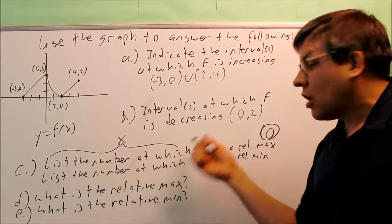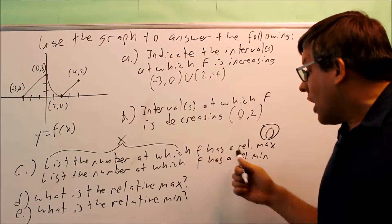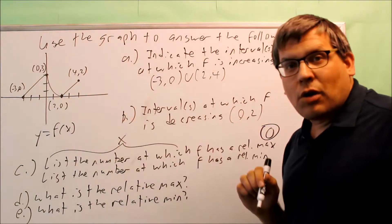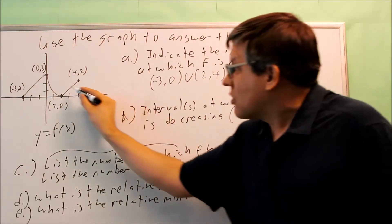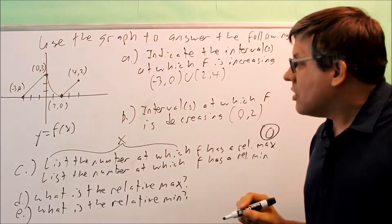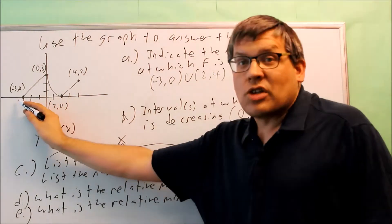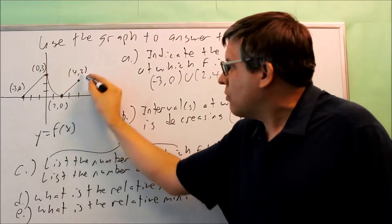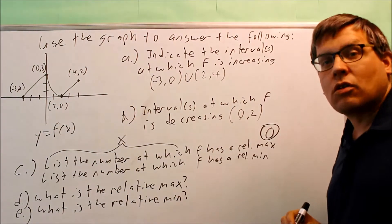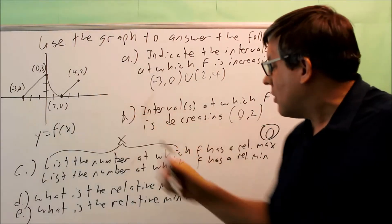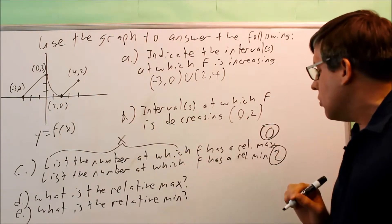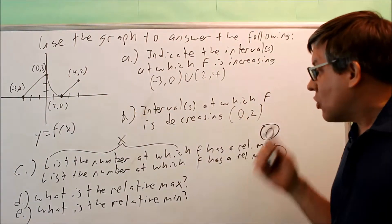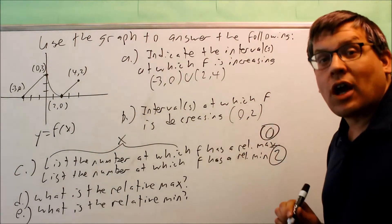Same thing — 'list the number at which f has a relative min' is asking for an x value again. A relative min means you have a decreasing part and then an increasing part afterwards — it's the bottom of a valley. The point (-3, 0) is not a relative min because there's no decreasing part before it. You need the complete set: decreasing then increasing. So the answer is x = 2; that's where the valley is happening.